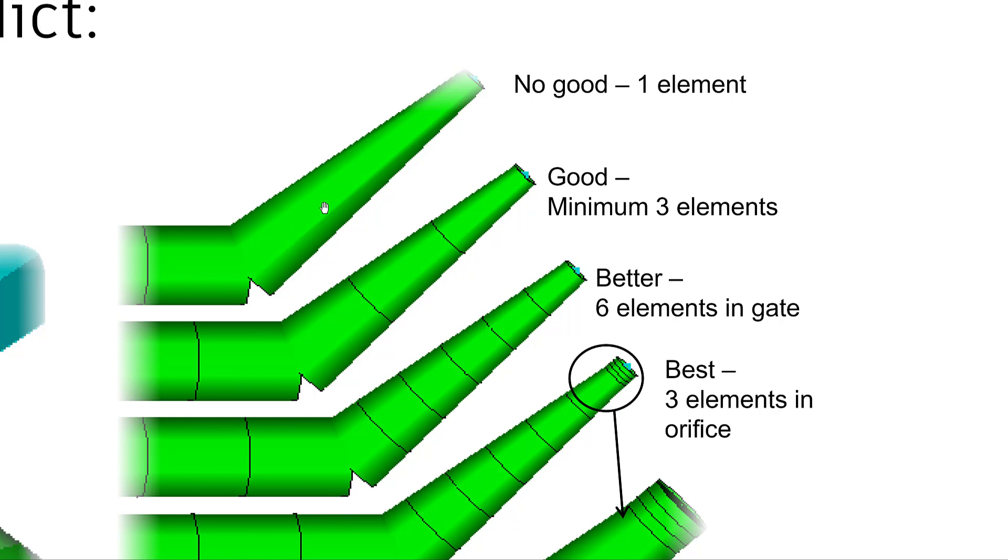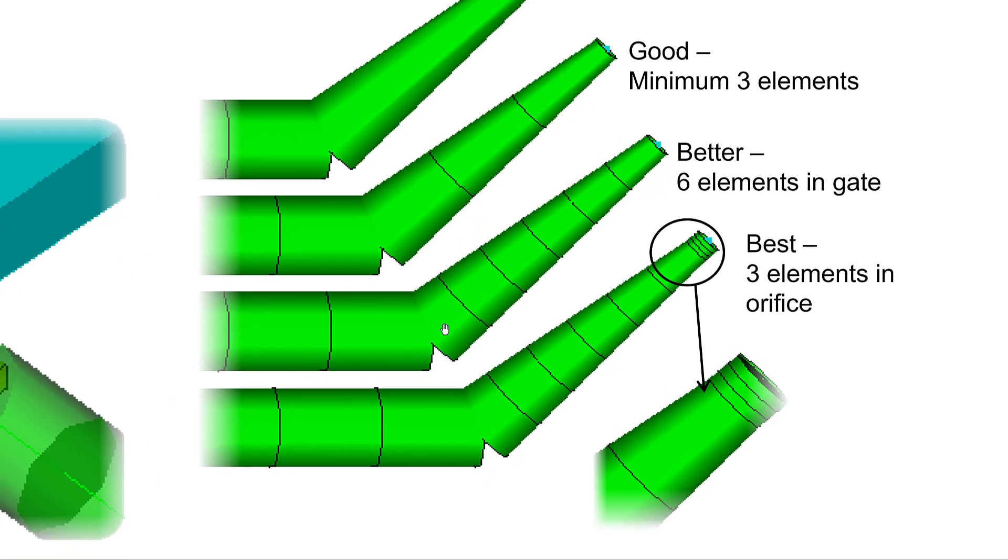By default, if you assign the attributes to the curve, the software creates three elements by default. But many times to increase accuracy you can change that default three elements to six elements. That's better but not the best.